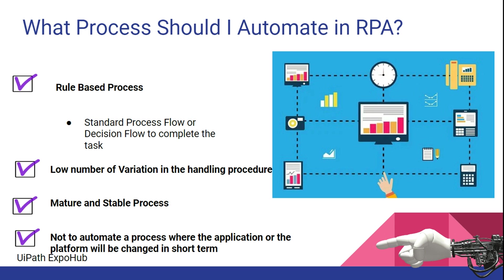Another important consideration is calculating your savings. If 10 people are each completing 20 transactions per day — that's 200 transactions per day. If you automate this, you might only need 2 employees to handle exceptions that automation cannot process, freeing up 8 employees for more critical work. This is called FTE — Full-Time Employee — savings, and the recommended minimum is saving at least 2 to 3 FTEs.